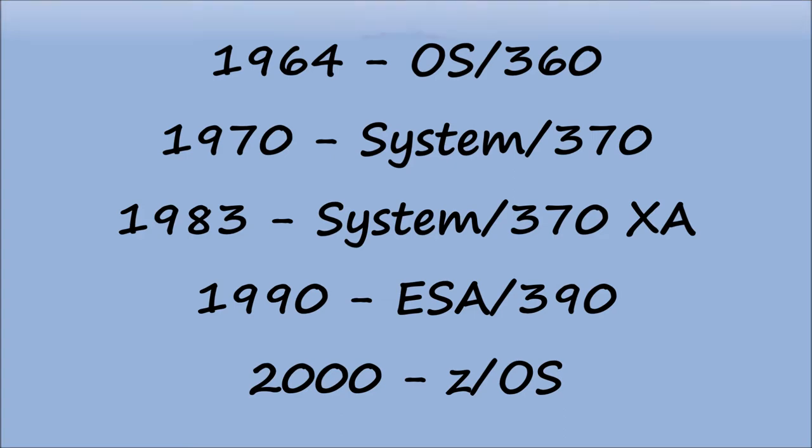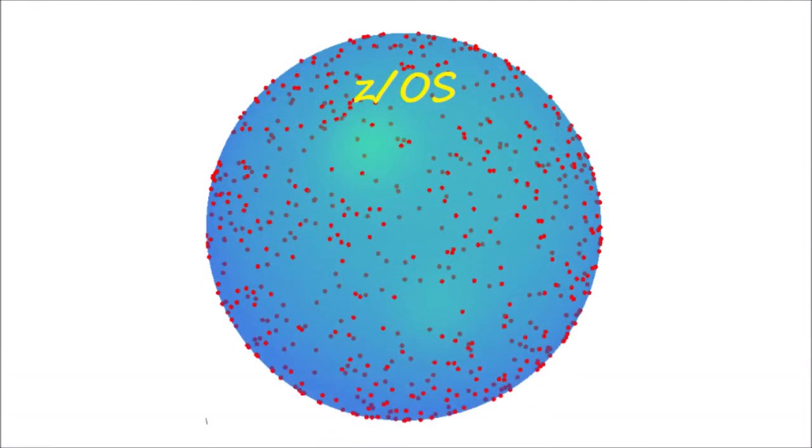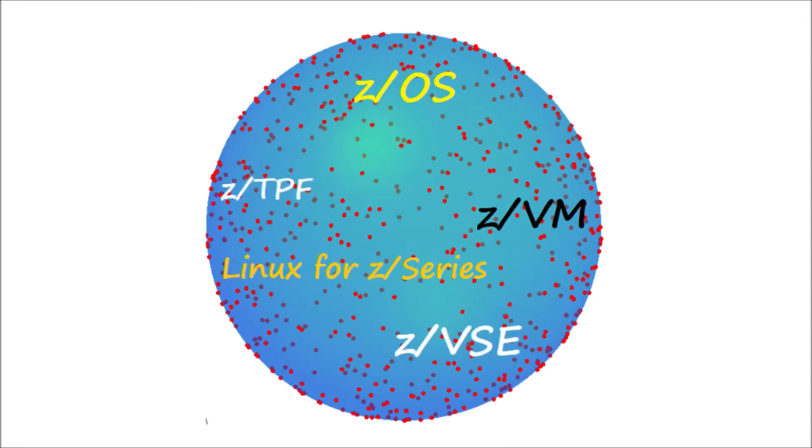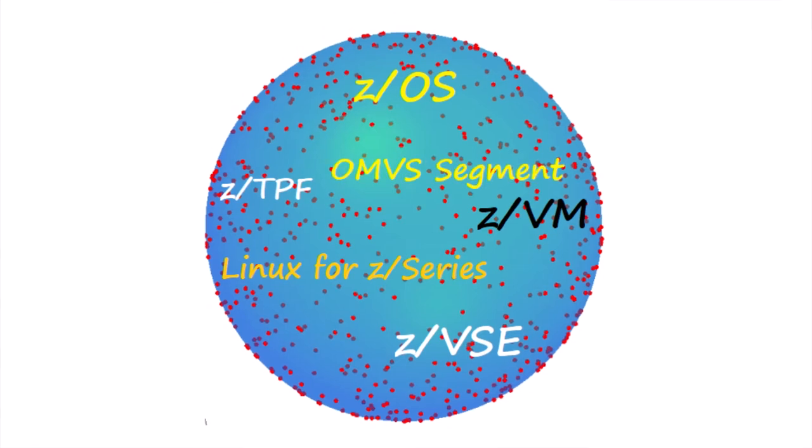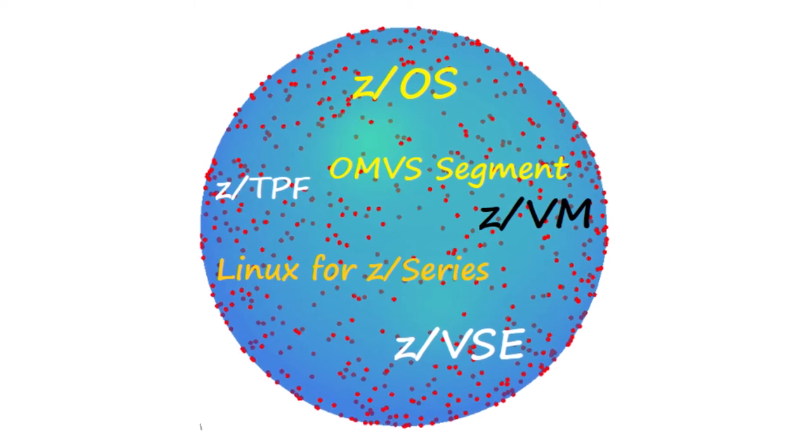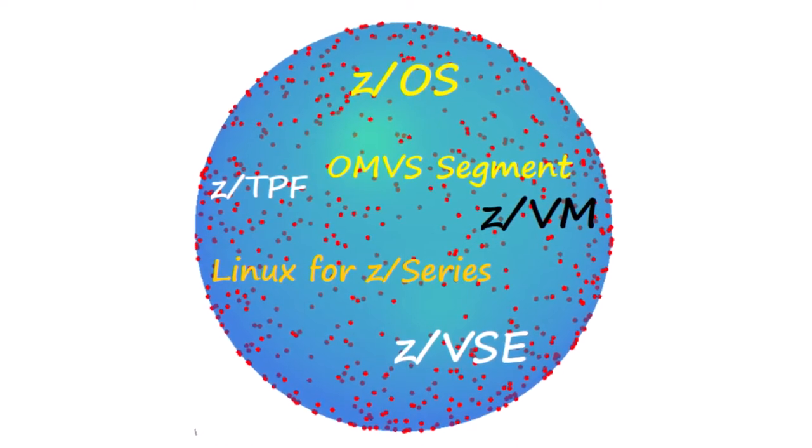As of today, typically there are five different operating systems that can run on mainframe: z/OS, z/VM, z/VSE, Linux for System z, and z/TPF. Additionally, a Unix segment which is also called OpenMVS or OMVS can run on top of z/OS operating system as a subsystem of z/OS.